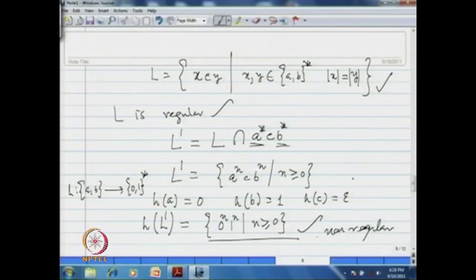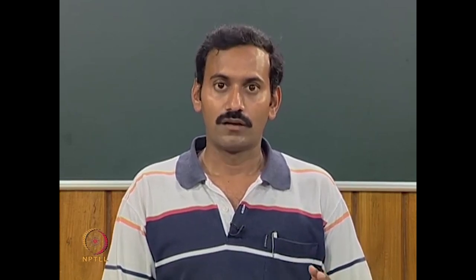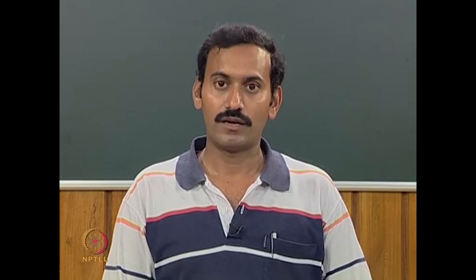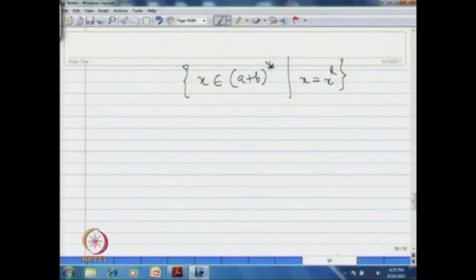So using closure properties — intersection and homomorphism — we concluded that assuming L is regular leads to a non-regular language, which is a contradiction; hence L is non-regular. Exercise: apply the pumping lemma to prove that the language of all palindromes over {a,b} is a non-regular language.